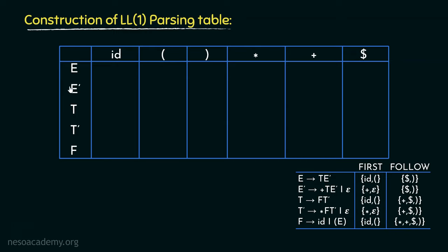Let's begin with the non-terminal symbol E. In the first of E, we have ID and open parenthesis. E is involved in only one production rule, so we are going to place the production rule — E can be rewritten as T followed by E-dash — in the columns of ID and open parenthesis. Apart from these two terminal symbols, the non-terminal E cannot generate any of the others.